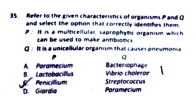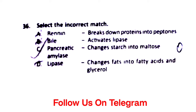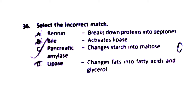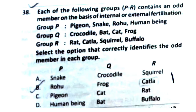Question 36: Select the incorrect match. A: Rennin breaks down proteins into peptons — this is incorrect; rennin curdles milk, not breaks proteins into peptons (that is the work of pepsin). So the incorrect match is Option A.